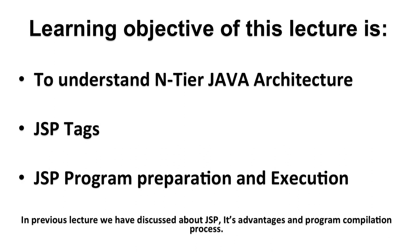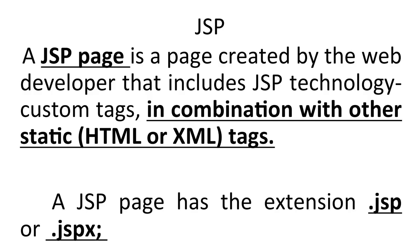In the previous lecture we discussed about JSP, its advantages, and the program compilation process. Now, a little bit about JSP: a JSP page is a page created by a web developer. JSP means Java Server Pages. The page includes JSP technology, custom tags, and a combination of other static HTML and XML tags. JSP is an embedded programming technology.